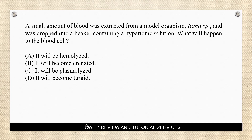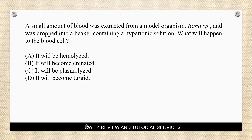To answer this question, remember the mnemonic: Hyper-cren, Hypo-lyse. That is our mnemonic for hypertonic and hypotonic solutions and their effect in animals. We quickly skimmed the question — there is an organism, Rana sp., where blood was dropped in a hypertonic solution. Since it is a hypertonic solution, the answer is crenation — letter B.